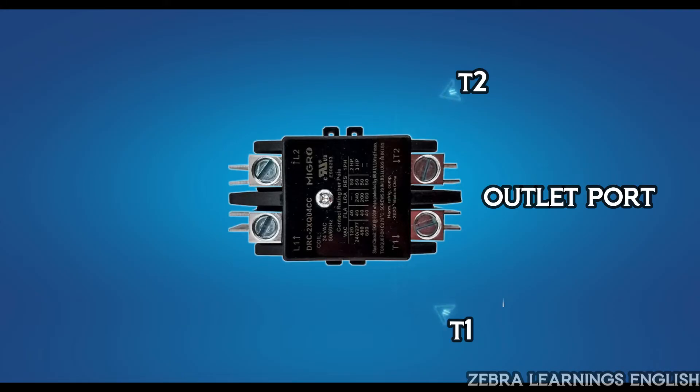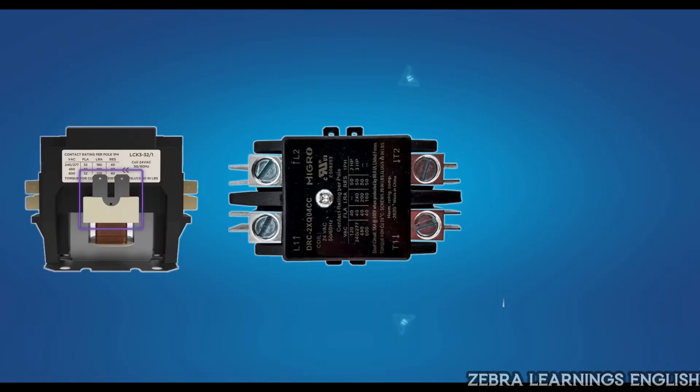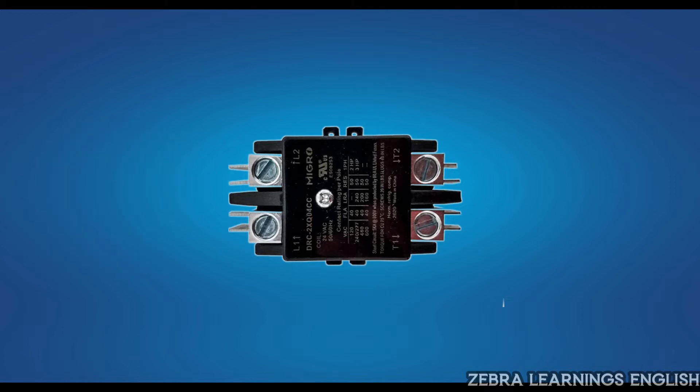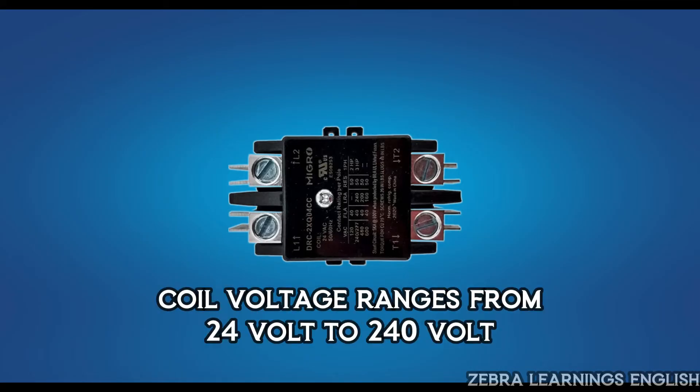The ports on both sides of the contactor are the inlet and outlet ports of the coil. It is through this that the coil energizes. The voltage limit of the coil varies from 24V to 240V, depending on the contactor.